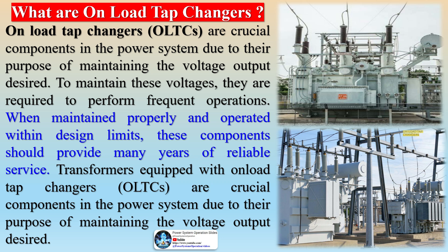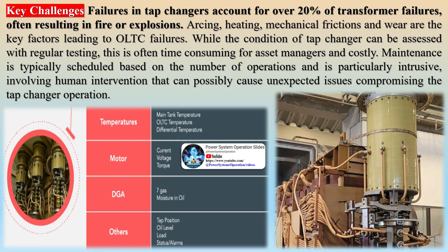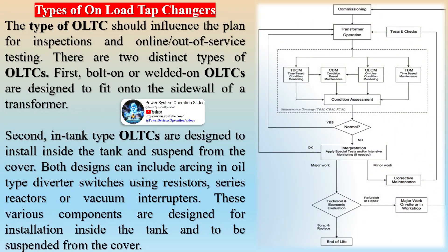The type of OLTC should influence the plan for inspections and testing. There are two distinct types: first, bolt-on or welded-on OLTCs designed to fit onto the sidewall of a transformer; second, in-tank type OLTCs designed to install inside the tank and suspend from the cover. Both designs can include arcing-in-oil type diverter switches using resistors, series reactors, or vacuum interrupters. Modern technology such as vacuum interrupters has greatly improved OLTC performance, however many OLTCs in service today are based on older technology much more susceptible to significant wear and tear on critical elements.